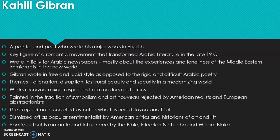Khalil Gibran was a painter and a poet who wrote his major works in English. He was basically a painter. He lived mostly in the US even though he was born in Lebanon. Khalil Gibran is considered to be a key figure of a romantic movement that transformed Arabic literature in the late 19th century. His style was extremely simple and lucid.